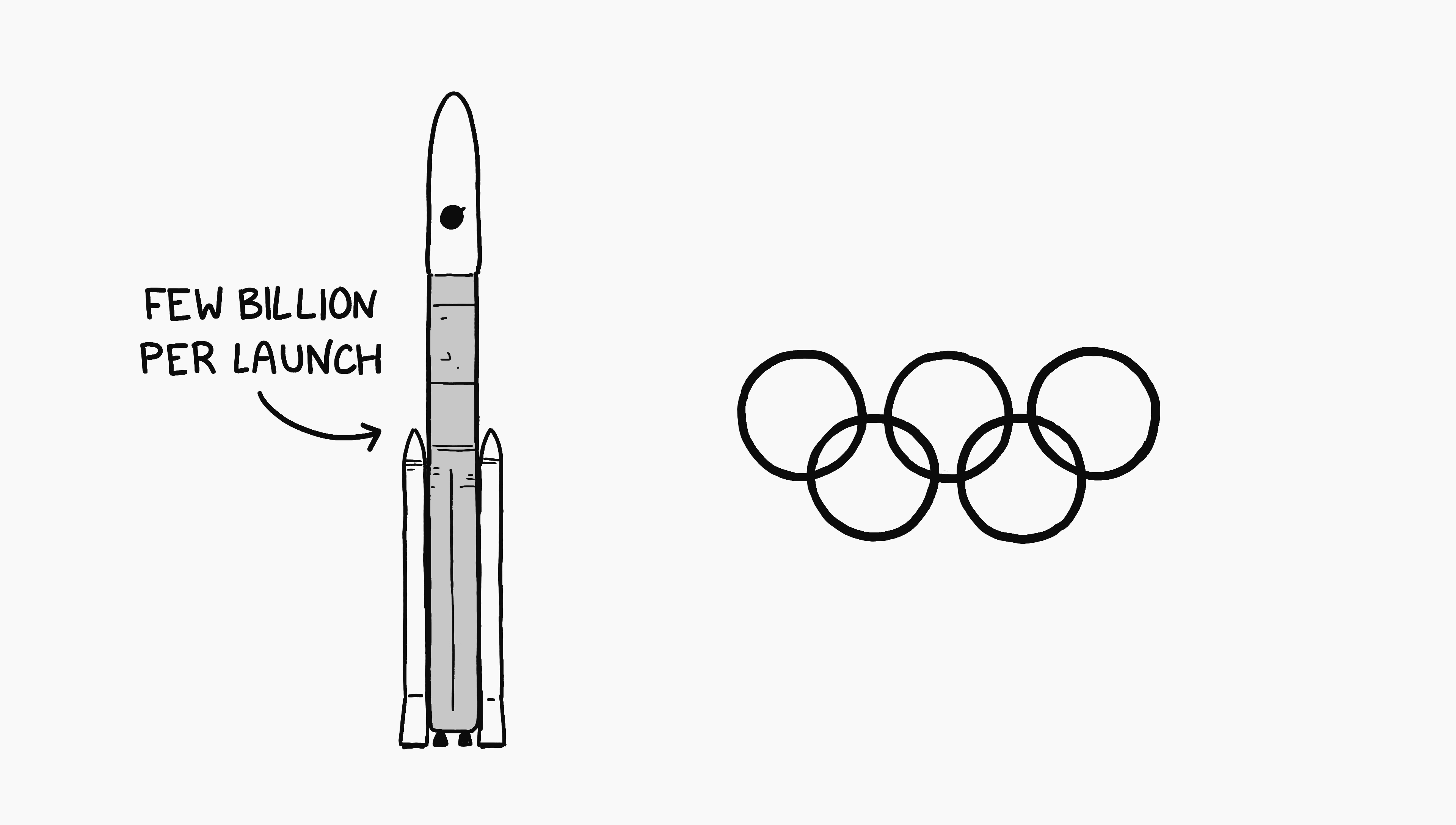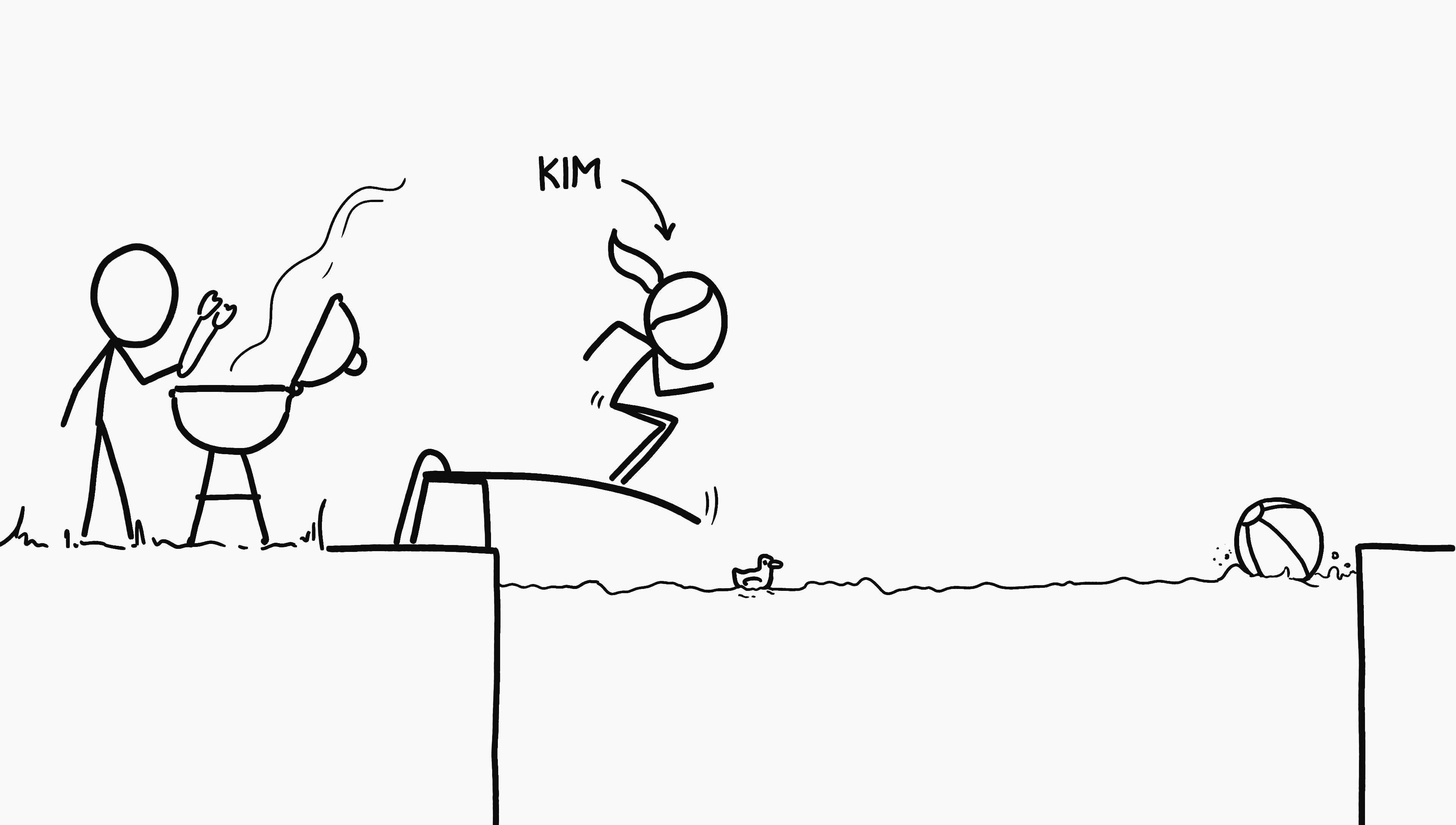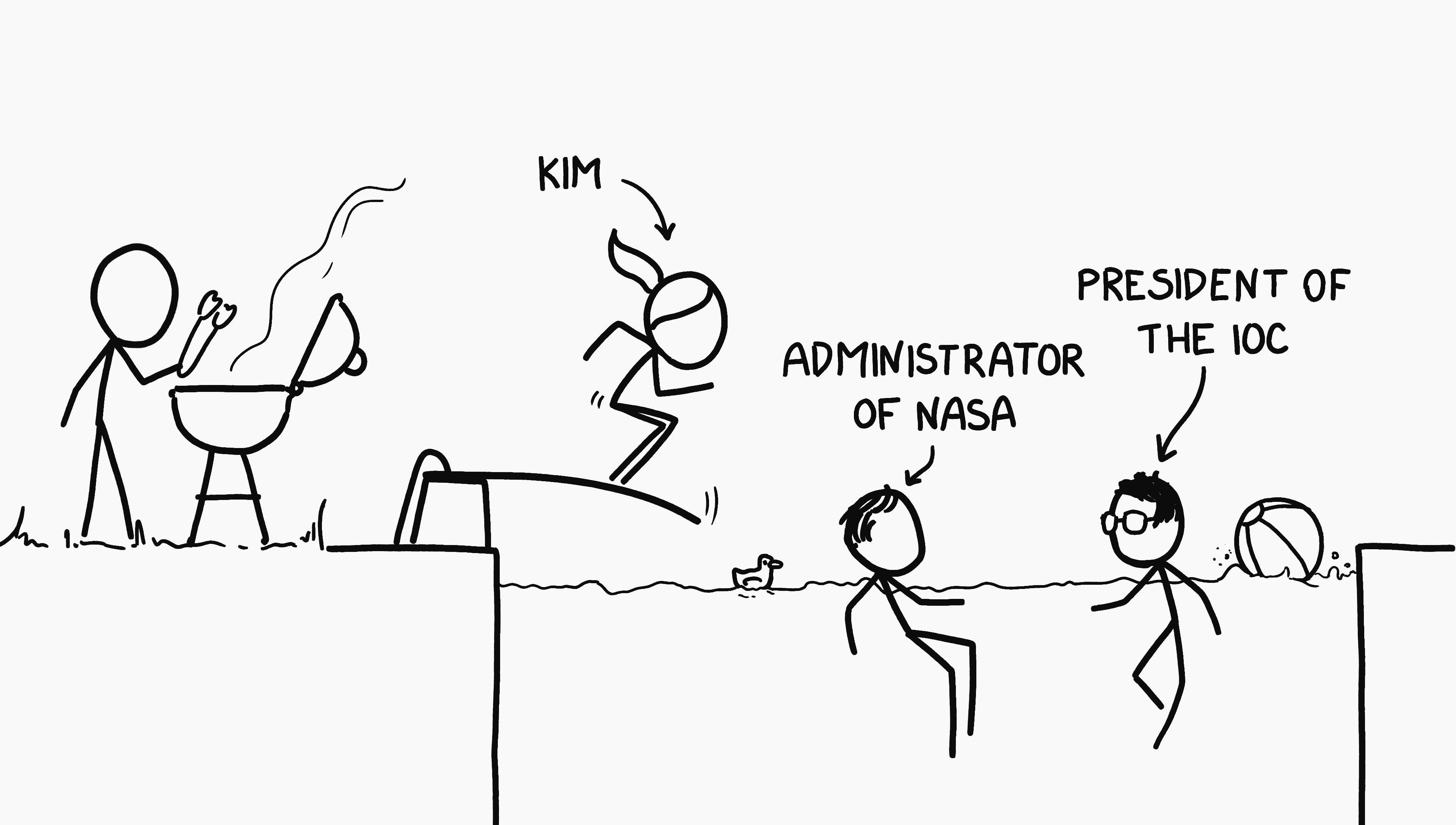For comparison, the budget for the Summer Olympic Games is typically upwards of $10 billion. So maybe the next step, if you really want a swimming pool on the moon, is to invite the heads of NASA and the International Olympic Committee to your next pool party.